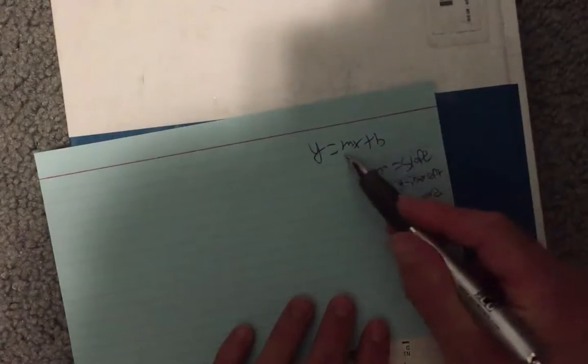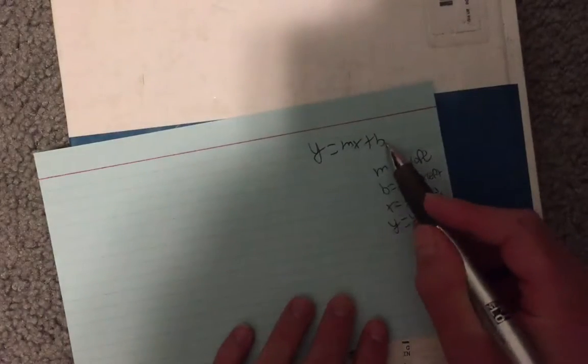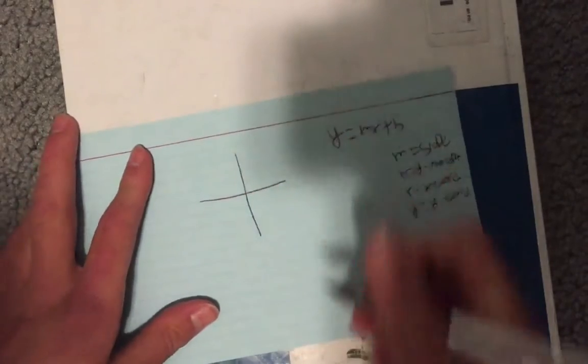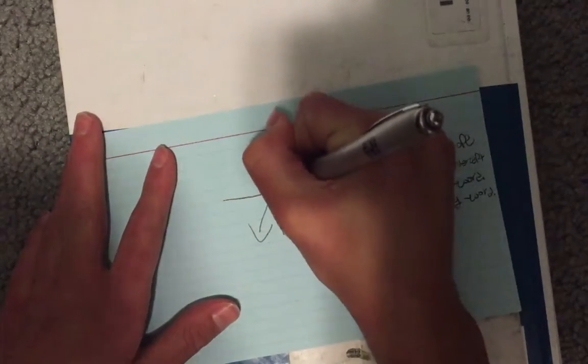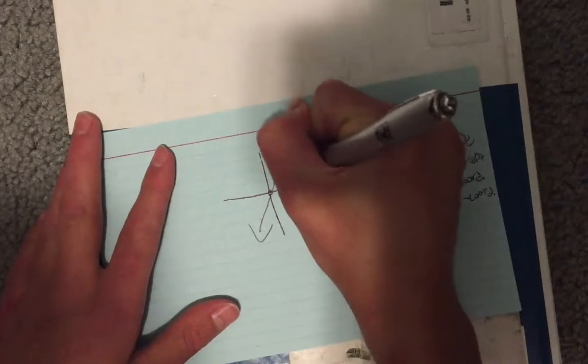So in order to have a full equation, you need to have both of these filled in. So for example, let's go with this. Okay, so we have zero, zero, and one comma one.